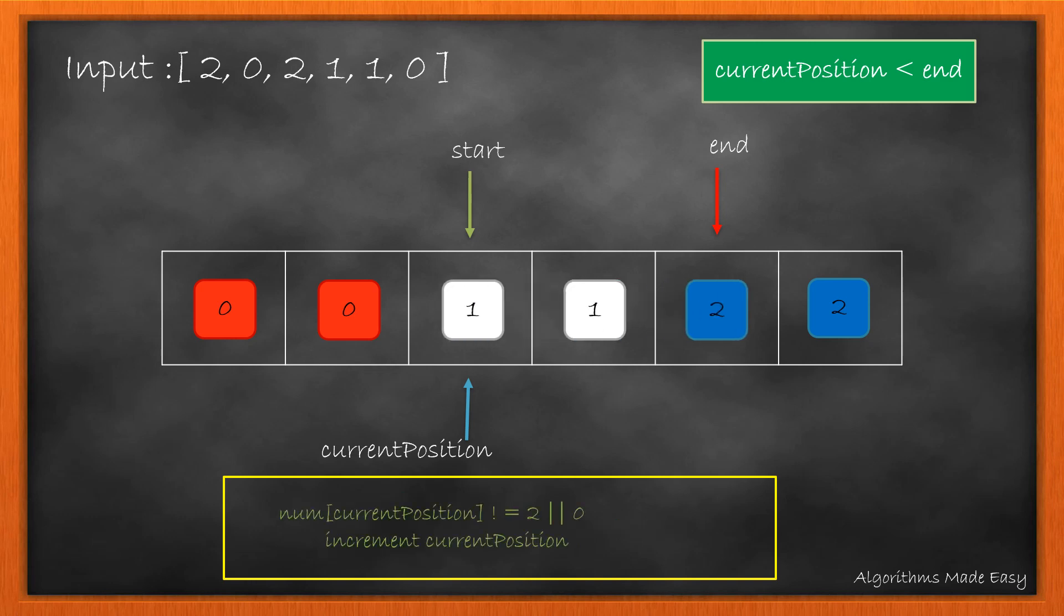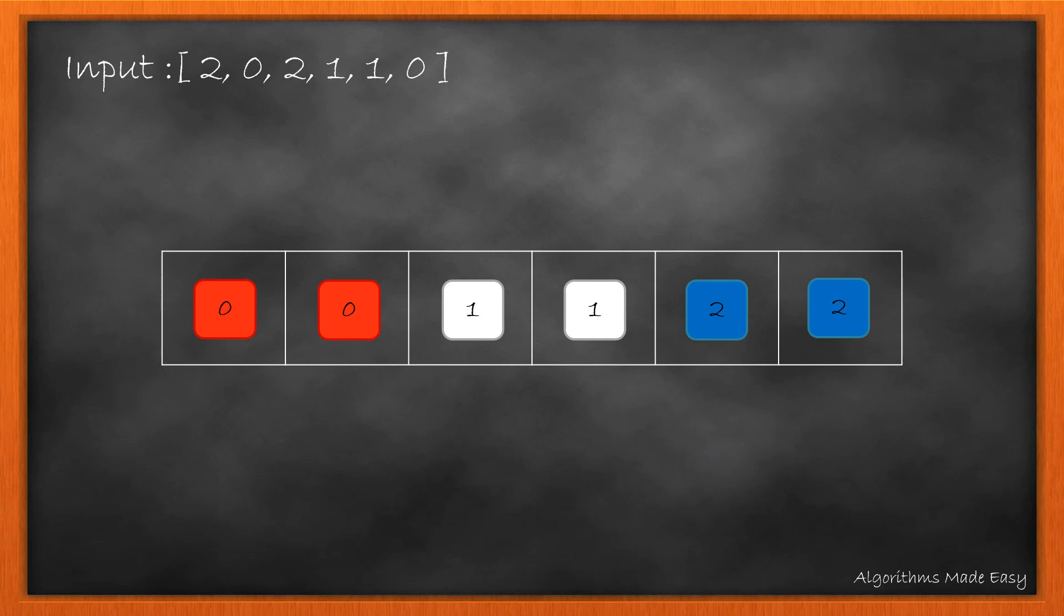So we swap the values at end and current position and increment the current position. As the value here is 1, we just increment the current position. The end and current position now becomes the same which fails our looping condition. So we stop and this becomes our result in sorted color array.